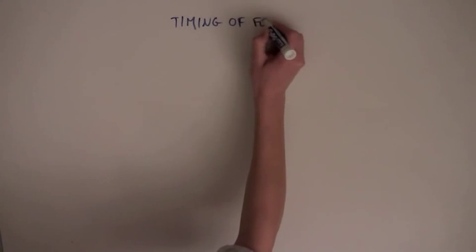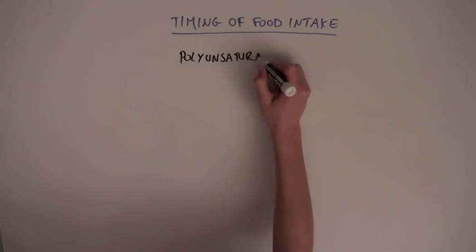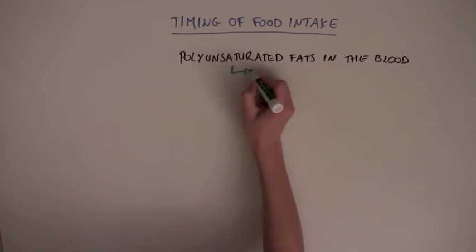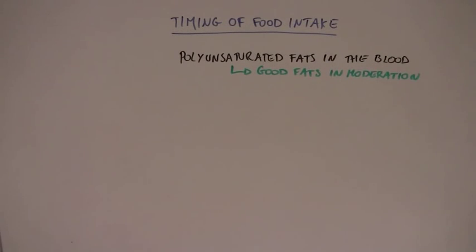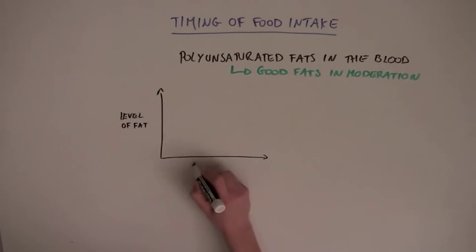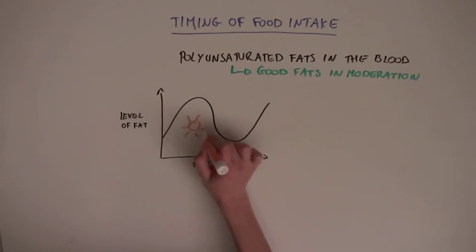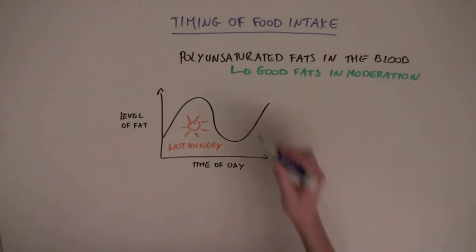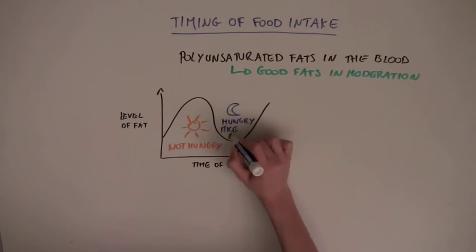Well, the timing of food intake is influenced by levels of polyunsaturated fats in the blood. These are good fats that can benefit your health when eaten in moderation. So, in mice during the day, levels of these fats are high, so the mice are not hungry. But at night, these levels drop, so the mice get hungry, and they eat.